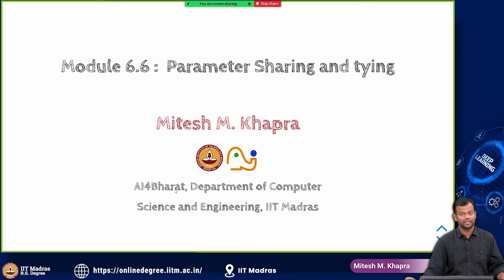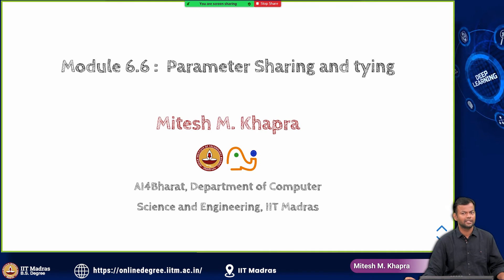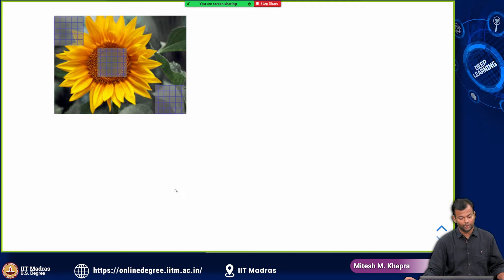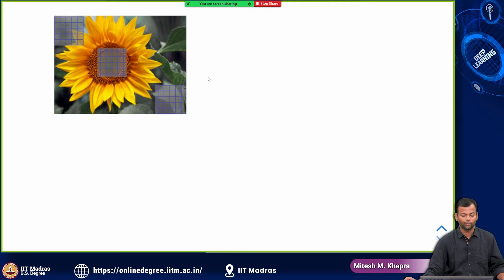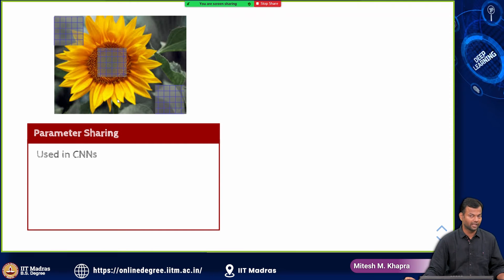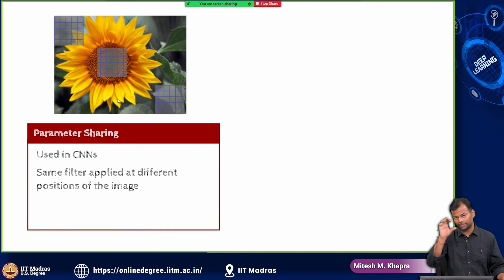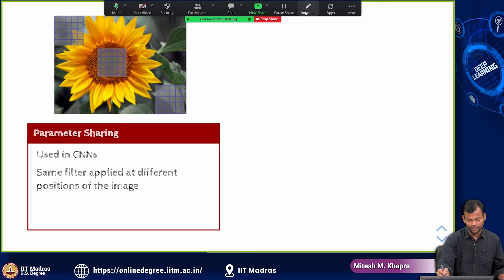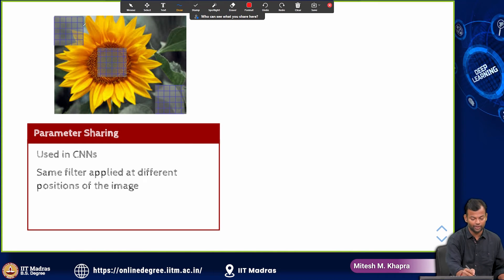The next technique is about parameter sharing and tying and we will see this in a bit more detail when we talk about convolutional neural networks. In convolutional neural networks, if you want to process an image, you use what is known as a convolutional filter and the same filter is applied to different parts of the image. What I am trying to show you here and this is of course become much more clear when we do convolutional neural networks.